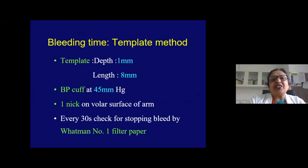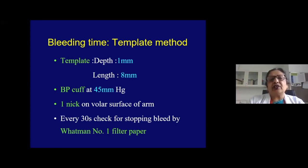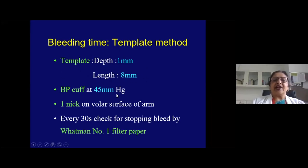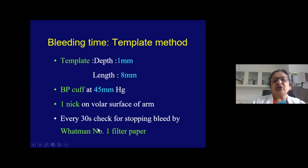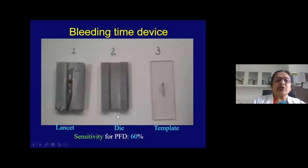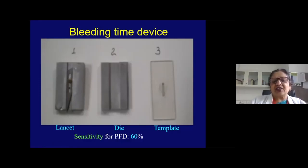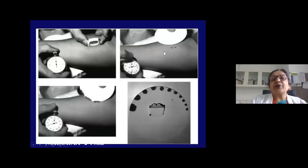Bleeding time is the next important test after PT/APTT, though many labs no longer perform it because it is time-consuming and requires good training. The template method uses a fixed template of depth 1 mm and length 8 mm. The patient sits on a stool with a BP cuff at 45 mmHg, a nick is made on the volar surface of the arm, and blood is checked every 30 seconds using filter paper. The sensitivity for picking up a platelet function defect with this method is about 55–60%.